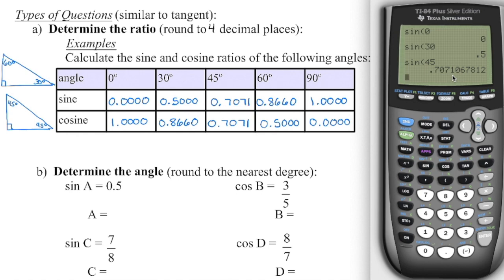These values weren't randomly chosen — they're specific values that create what we call the special case triangles, which we'll get to in a few days. In a right triangle, the two non-right angles must add up to 90°. If this angle is 45°, the other must also be 45°. Looking at the sine of 30°, with 30° as the reference angle, we're dividing the opposite side by the hypotenuse. You'll notice the same value appears for the cosine of 60°.